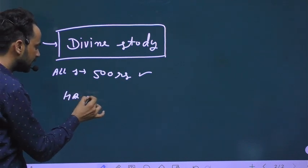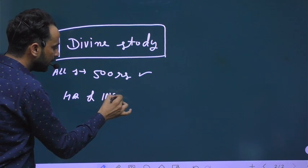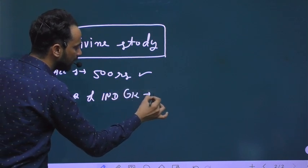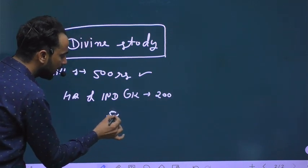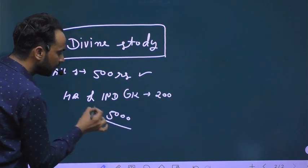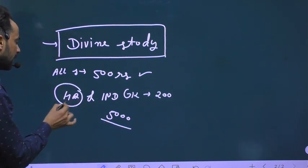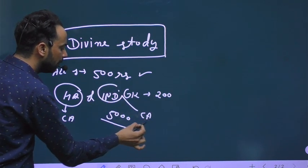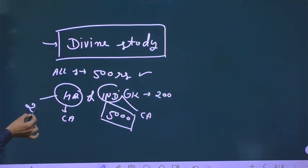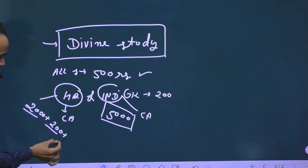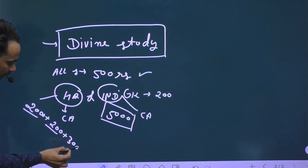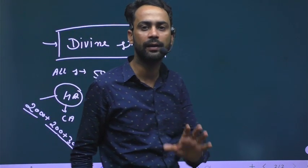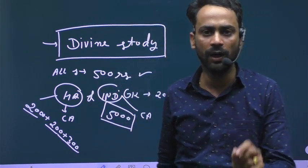Apart from this, I will talk about Haryana and India GK. A special batch has been run for 200 rupees in which there will be 5000 MCQs in total - Haryana and India both with current affairs. That means both Haryana's and Haryana current affairs, India GK and India current affairs. Combined total 5000, of which Haryana GK is 200, plus 200-300 will be current affairs.